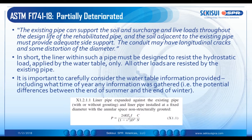The partially deteriorated design condition is where the existing pipe can actually support the soil, surcharge, and live loads throughout the design life of the rehabilitated pipe, and the soil adjacent to the existing pipe can provide adequate side support. The conduit may have longitudinal cracks and some distortion of the diameter. In short, the liner within such a pipe must be designed to resist only the hydrostatic load applied by the water table. All other loads are resisted by the existing pipe. It is important to carefully consider the water table information provided, including what time of year any information was gathered — i.e. the potential differences between the end of summer and the end of winter.